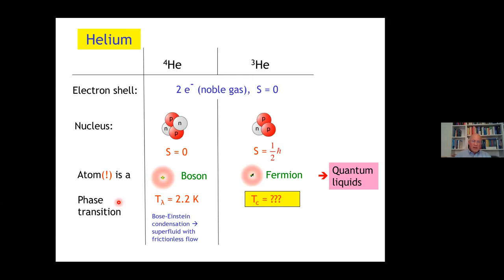For that we have to look inside the helium atom, because for once, although this is condensed matter physics, the electrons are unimportant. The electronic shell, it's a noble gas with two electrons that pair to spin zero. What is more important is the nucleus. Helium-4 has two protons and two neutrons, so the total spin is zero, and the entire atom is a boson. And at 2.2 Kelvin, there's this famous phase transition, which we can view as a Bose-Einstein condensation.